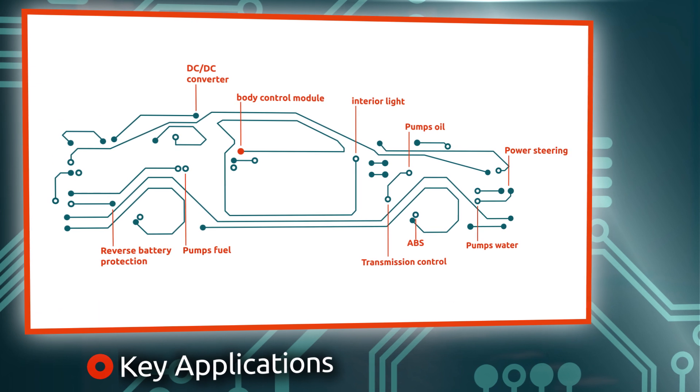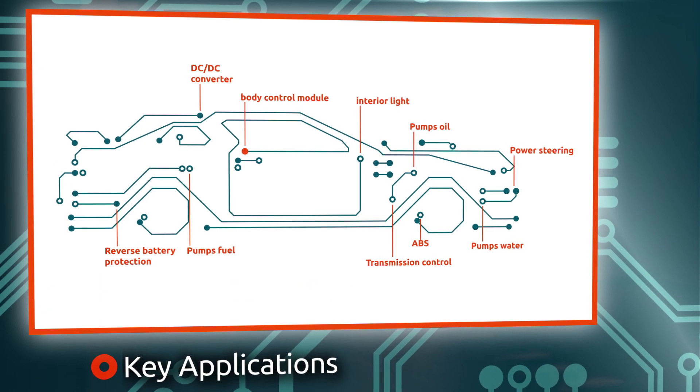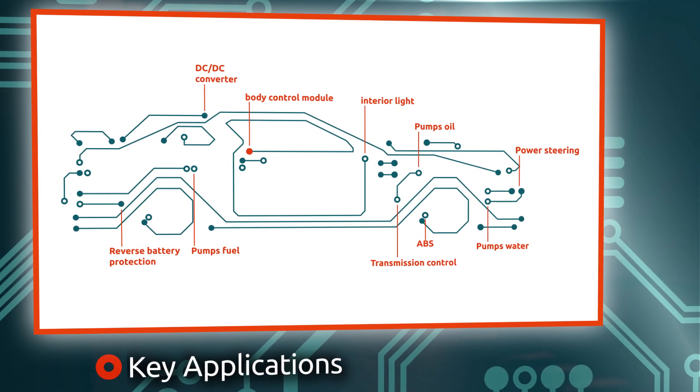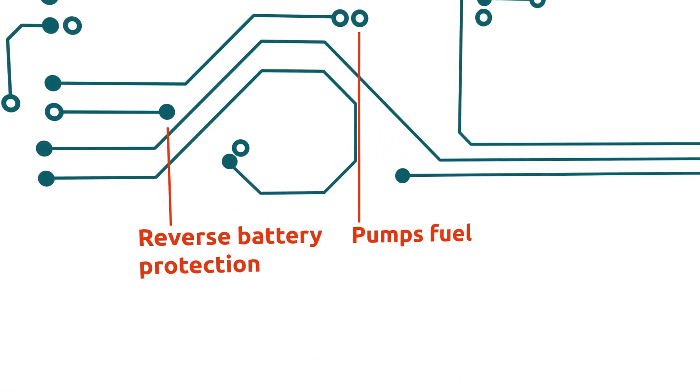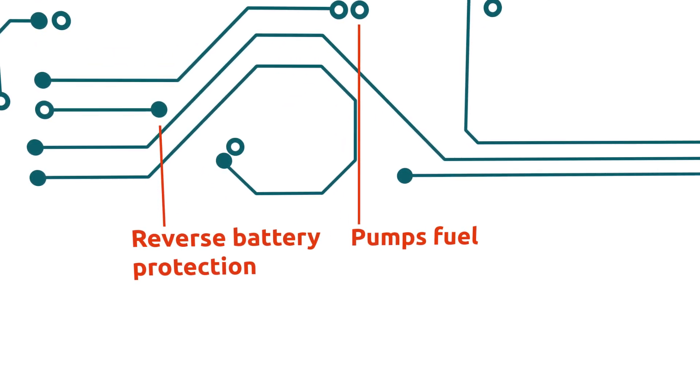This makes P-channel LFPAK56 the ideal solution for automotive power applications, particularly in high-side switching, such as seat adjustment, sunroof and window lift. This innovation is an ideal replacement for larger packages in reverse battery protection.